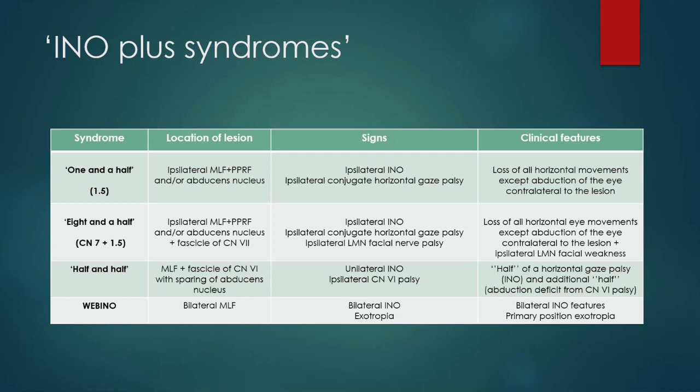So patients will have the same features of a one-and-a-half syndrome plus ipsilateral lower motor neuron facial weakness. There is also something called half-and-half syndrome, where the patient has a lesion involving the medial longitudinal fasciculus and the fascicle of the sixth nerve, but with sparing of the abducens nucleus. Patients will have half of a horizontal gaze palsy from the INO, and the additional half results from the abduction deficit from the sixth nerve palsy.